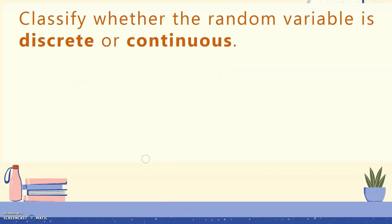Let's classify whether each random variable is discrete or continuous. Remember: if it's countable, it's discrete. If it's a product of measurement, then it's continuous.